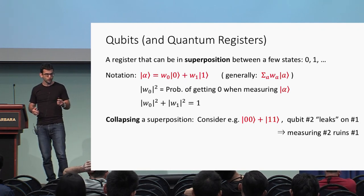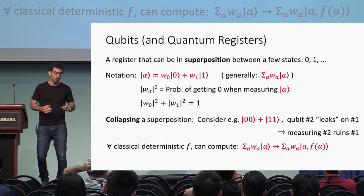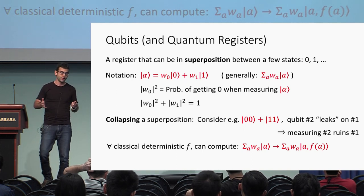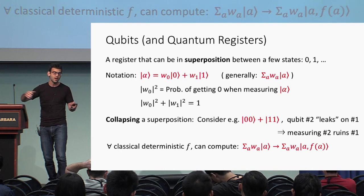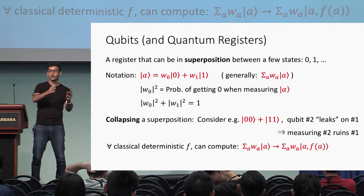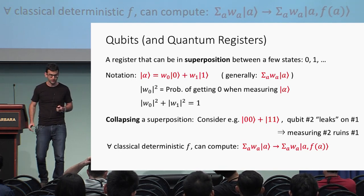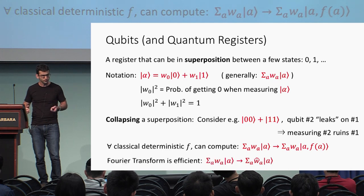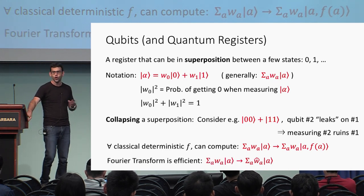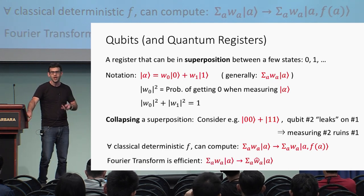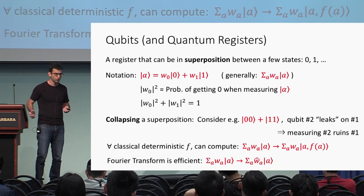Two properties we'll need about quantum registers: if I have a superposition over states A, I can create a superposition with the same weights on states A, f(A) for any function f. And you can efficiently perform Fourier transform on a quantum register when the states come from a nice abelian group.